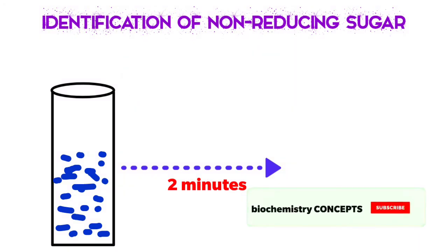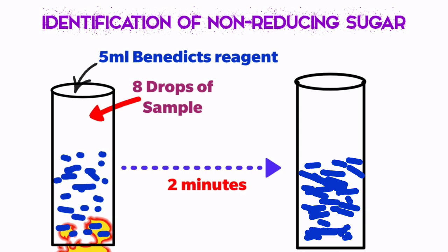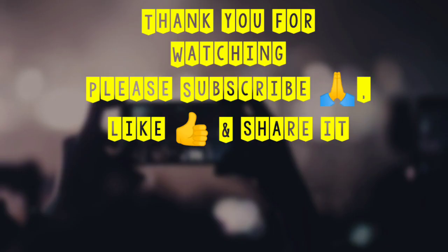After two minutes, if the color has not changed and the solution remains blue, it indicates the presence of a non-reducing sugar. In summary: if the color changes to green, yellow, orange, or red, it indicates a reducing sugar; if the color remains blue after two minutes of boiling, it indicates a non-reducing sugar.